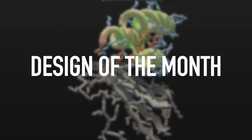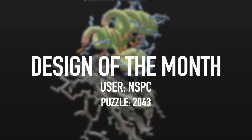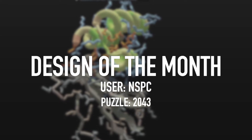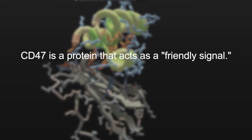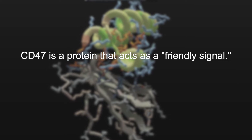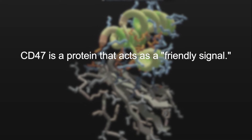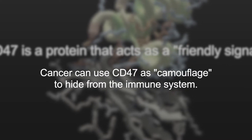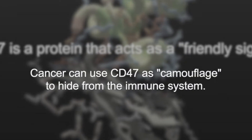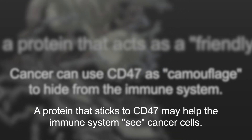For this month's Design of the Month, I want to look at a design by NSPC from Puzzle 2043, a CD47 binder design puzzle. To recap, CD47 is a protein that acts as a friendly signal, displayed by healthy cells to prevent your immune system from attacking healthy human tissue. The problem is that certain types of cancer cause overexpression of CD47, which acts to camouflage the cancer so that it can evade your immune system.